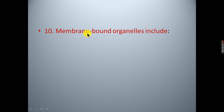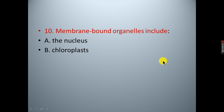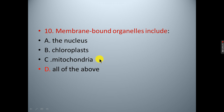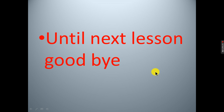Question ten: Membrane-bound organelles include: A. nucleus; B. chloroplasts; C. mitochondria; D. all of the above. The correct answer is D — all of the above. This concludes the file. Please listen. Goodbye, see you later.